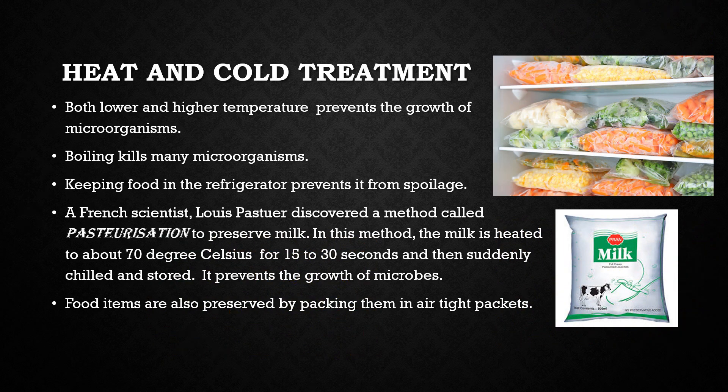Next is heat and cold treatment. Both lower and higher temperatures prevent the growth of microorganisms, so by heating and by cooling we can prevent food from spoilage. We boil milk to prevent it from spoilage — when we heat milk during boiling, the bacteria present in it get killed, so boiled milk remains good for a longer time. We can also cool food at low temperature by refrigeration, which also inhibits the growth of microorganisms. Food items like milk, dough, cooked food, cooked vegetables, fresh fruits and vegetables are kept in a refrigerator to prevent their spoilage.